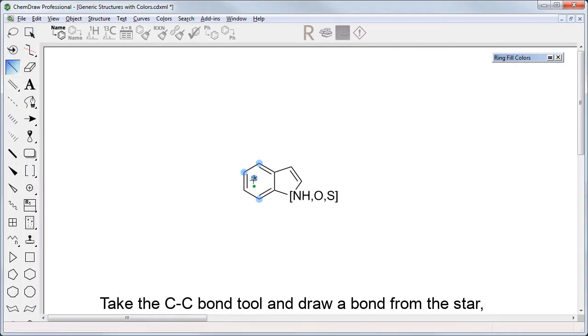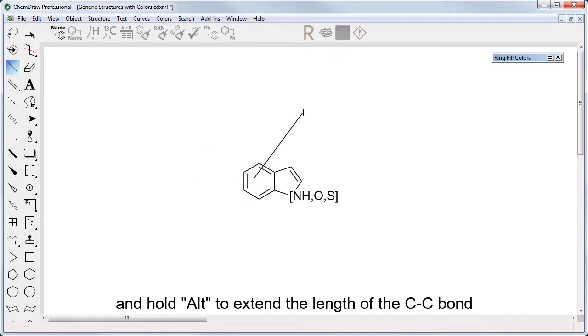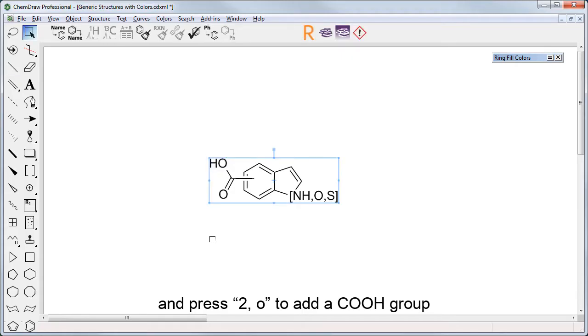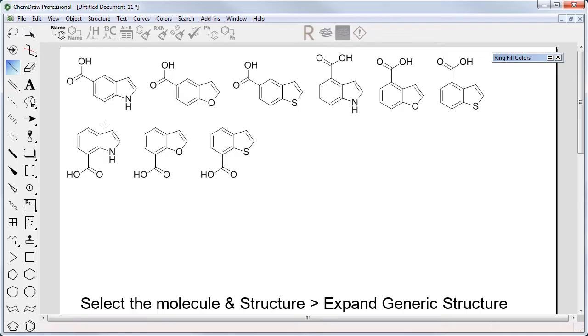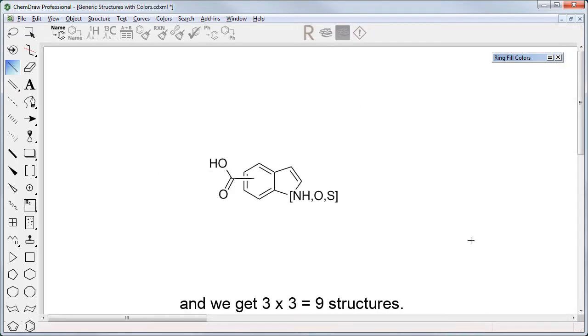You draw a bond from the star with the carbon-carbon bond tool, holding Alt to extend the length of the bond, and press 2-0 to add a COOH group. Select the molecule and Structure, Expand Generic Structure, and we get 3x3 equals 9 structures.